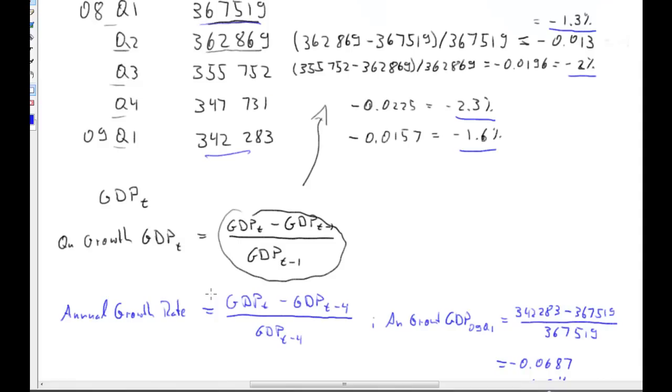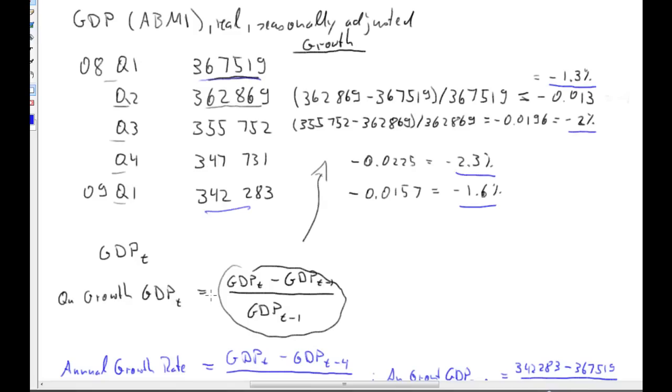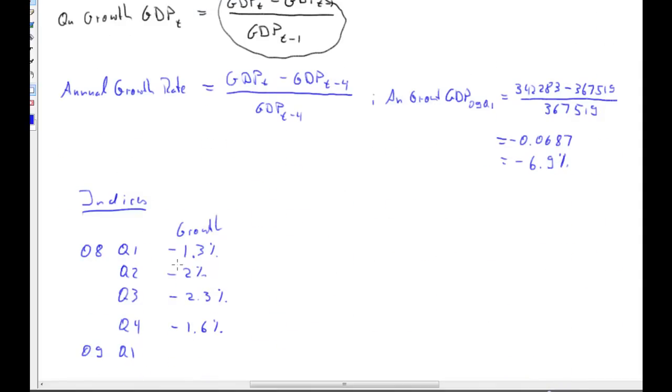Of course, negative 1.3 was the growth rate for quarter two. So, let me just move that one down. So, negative 1.3 was the growth rate for quarter two.